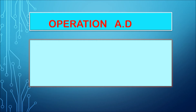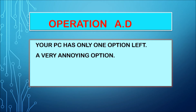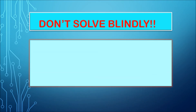When your operating system dies, how does your computer operate without an operating system? Your PC has only one option left — a very annoying option called the BIOS setup utility. So your computer has two options to wake up: the operating system, and the BIOS setup. When the OS is missing, you go directly into the BIOS setup.